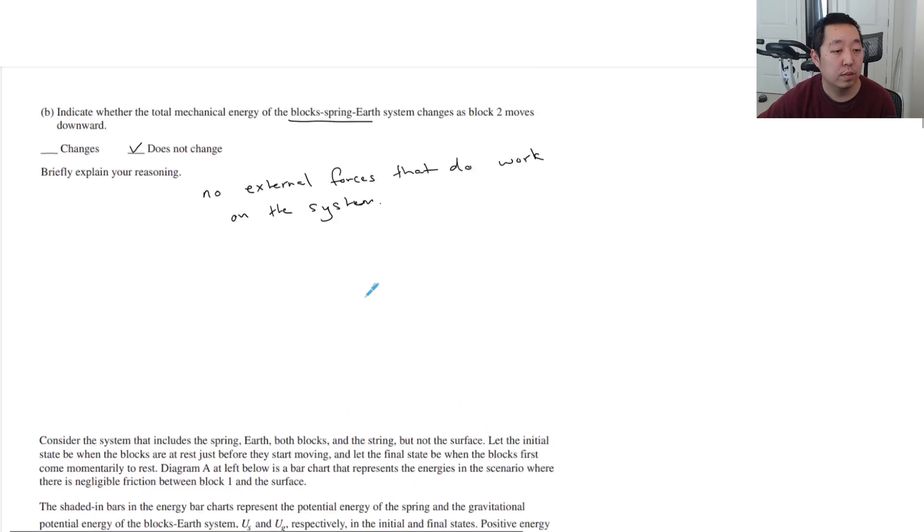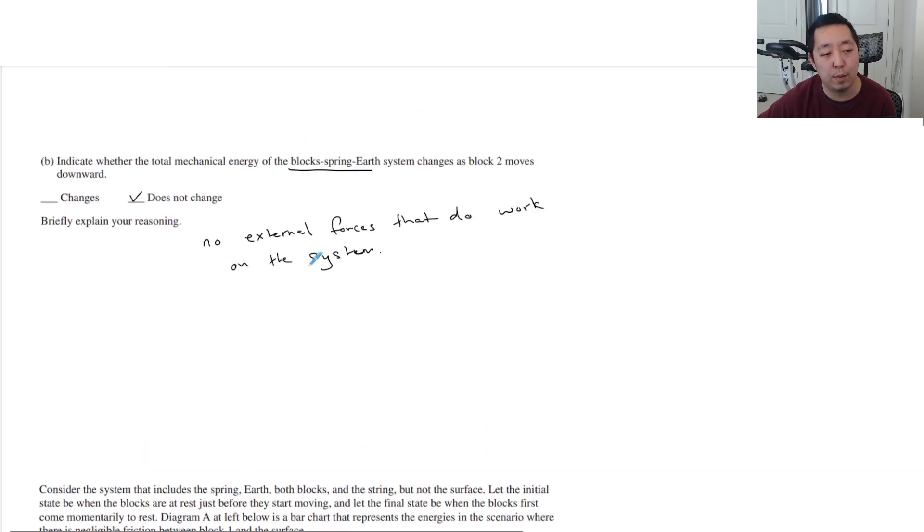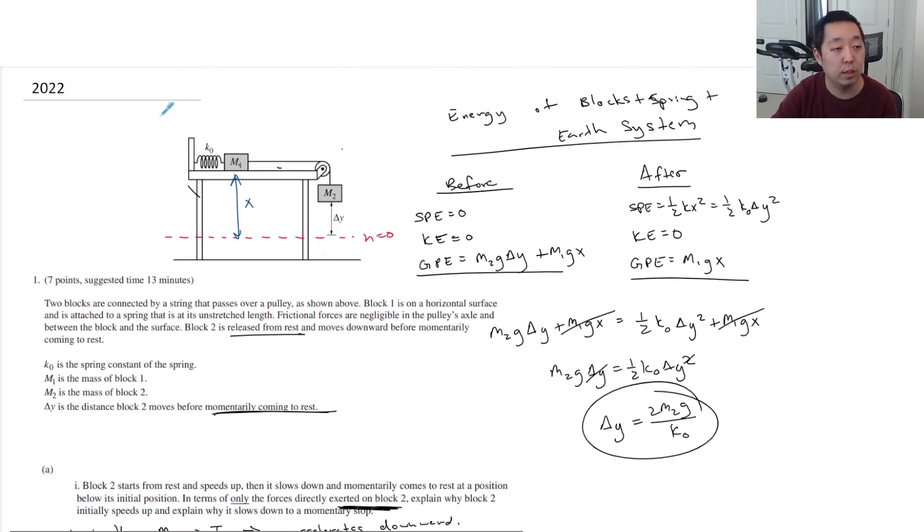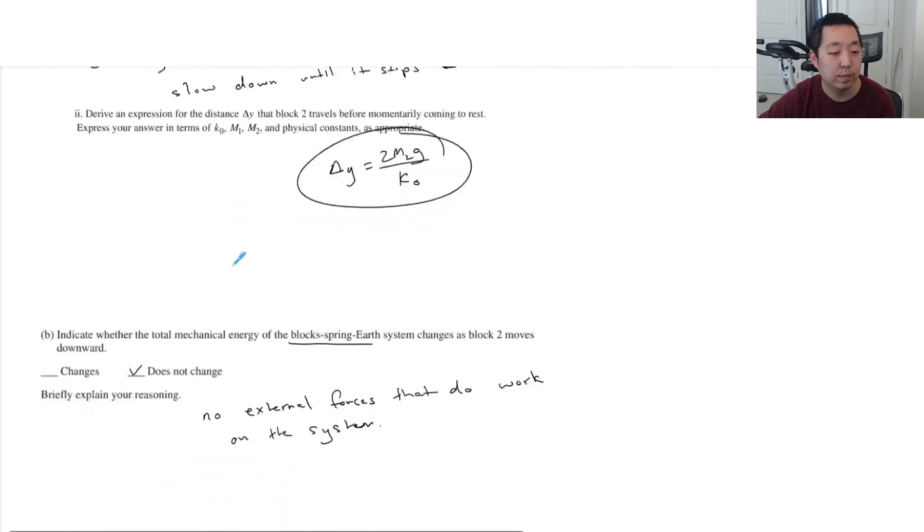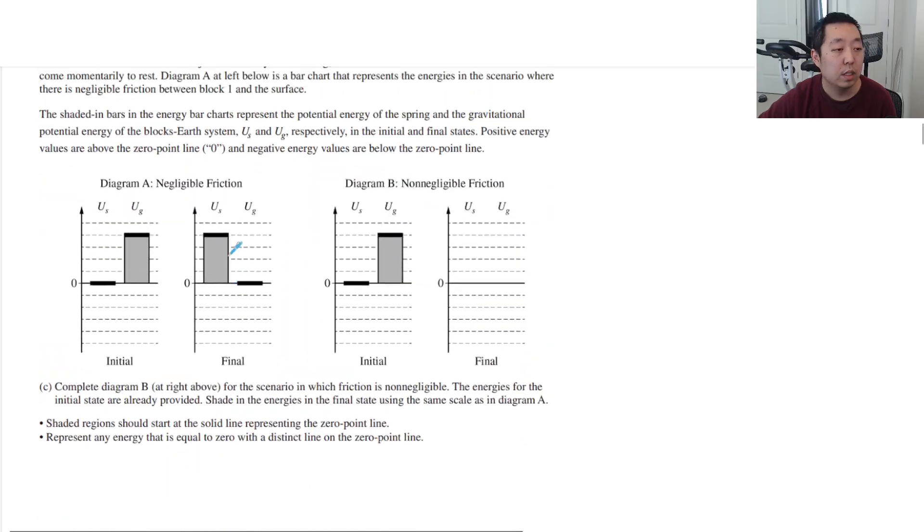All right. That's probably all you need to say. You could elaborate more on why there's no work. The only external forces are going to be like the normal force and the force from here. But the normal force moves perpendicular to the motion. So that's not going to happen. And then there's a force here, but he doesn't move. So he's not going to do any work either.